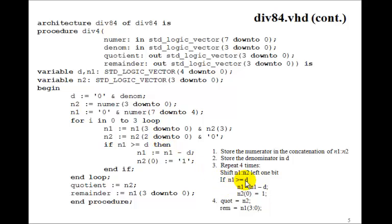Then we have to see if n1 is greater than or equal to d. Well, if n1 is greater than or equal to d, then n1 gets n1 minus d, and n2(0) gets 1. And we do this 4 times. So that's the loop. And then when we're done, the quotient is just in n2, and the remainder is in n1, 3 down to 0. So this procedure implements our 4-bit div4.